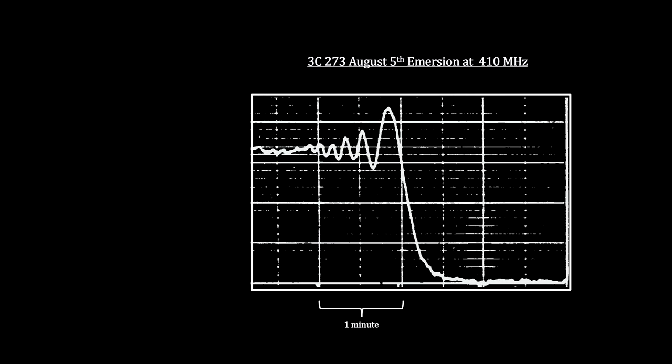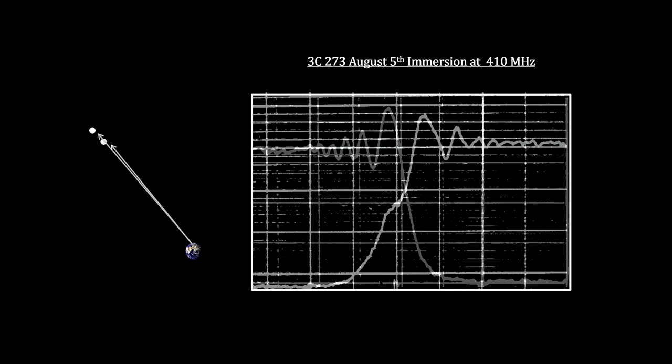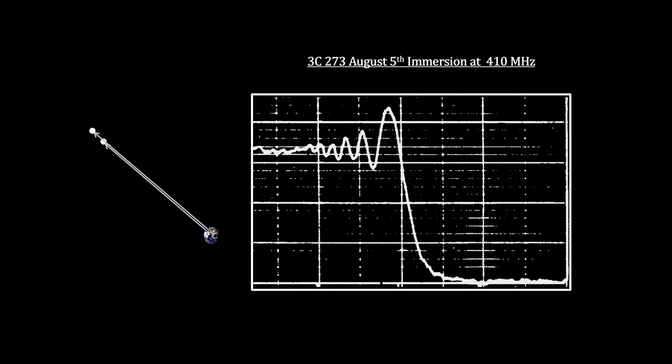Here's the pattern on emersion. The bump is gone. This was interpreted to be caused by the alignment between Earth and the source changing with a small angle between the two on entry, and aligned an hour and 19 minutes later on exit, as the Earth observer's position changed during the occultation.